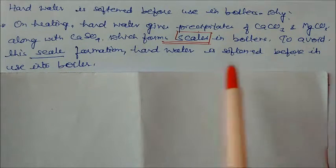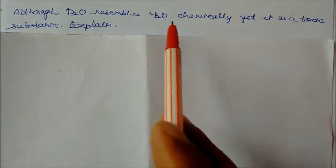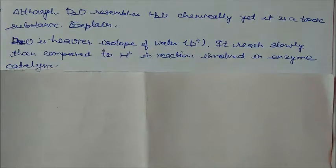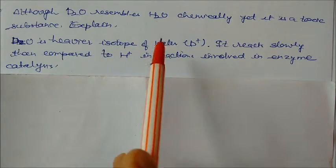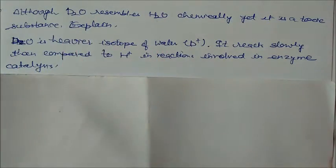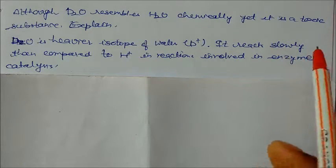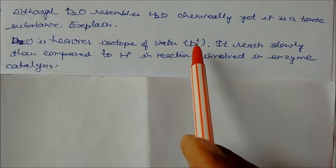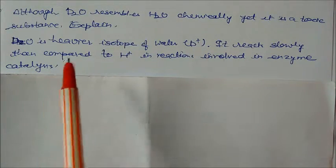Although deuterium oxide resembles H2O chemically, it is a toxic substance. Why? Deuterium is a heavier isotope of hydrogen, so D⁺ reacts slowly compared to H⁺ in reactions. The reaction of D⁺ is slower than H⁺ which is involved in enzyme catalysis, that's why we never use D2O and instead use H2O.